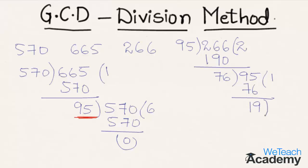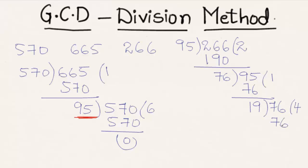Repeating the process, we get the remainder 0. So the last nonzero remainder, which is 19, is the greatest common divisor of 95 and 266. Hence we can say that the greatest common divisor of 570, 665, and 266 is 19.